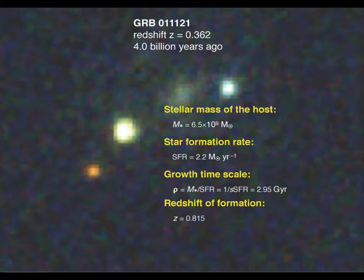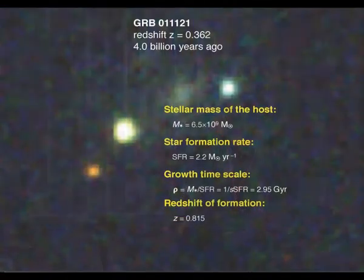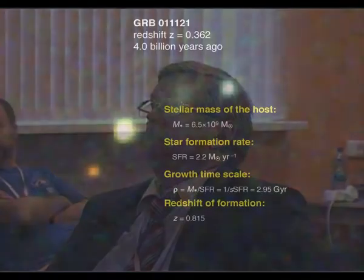What you observe is that these galaxies are typically small, similar to the Large Magellanic Cloud. They have a relatively high star formation rate, as you would expect, and the growth timescale — which is the stellar mass divided by the star formation rate, telling you how long it takes to form the galaxy — is a few gigayears, so there is active star formation going on here.